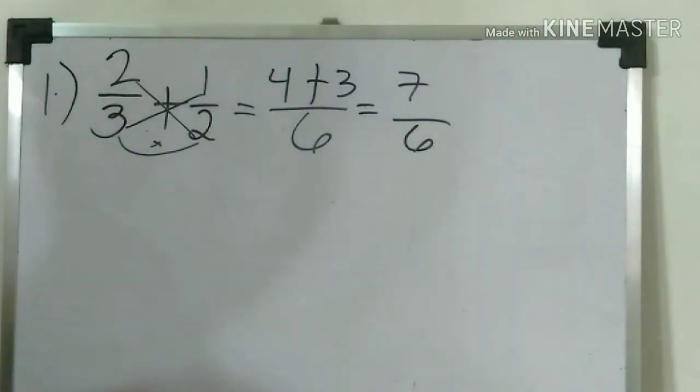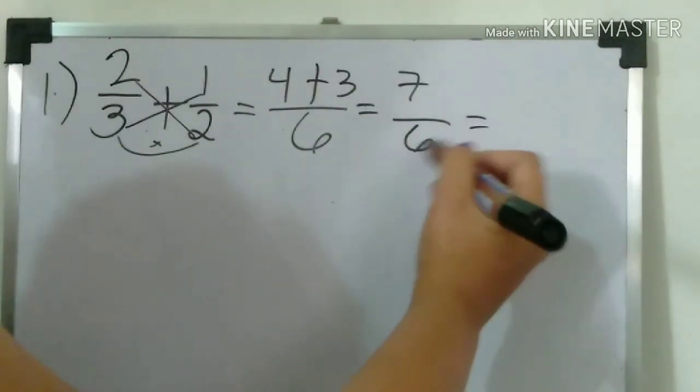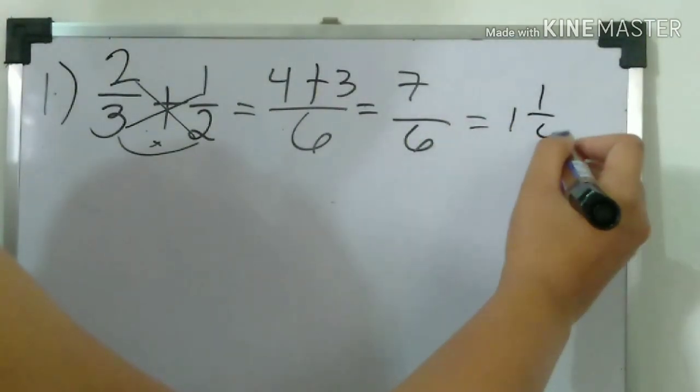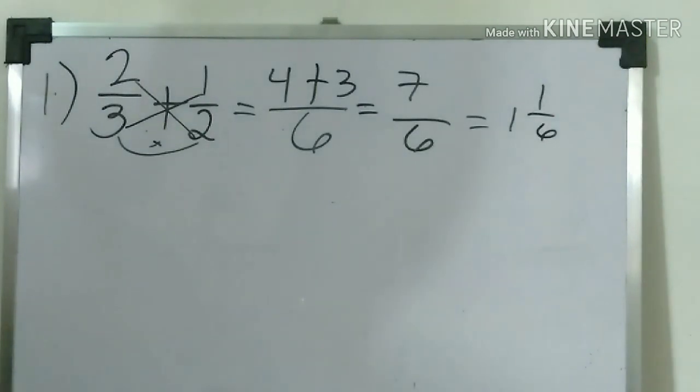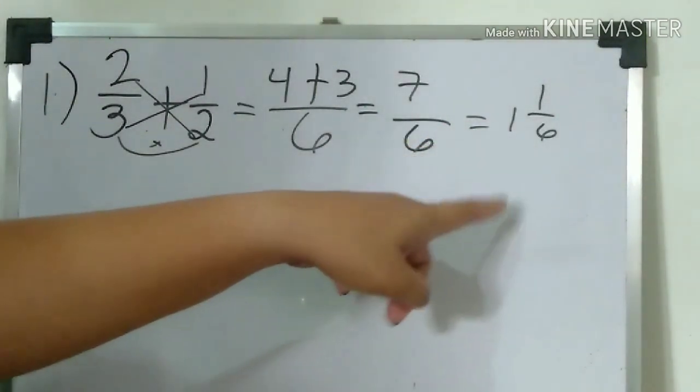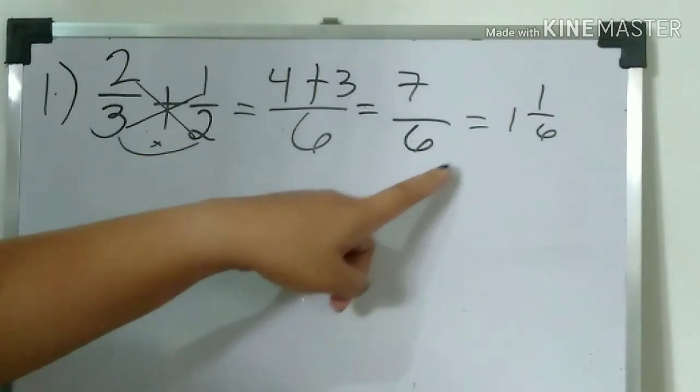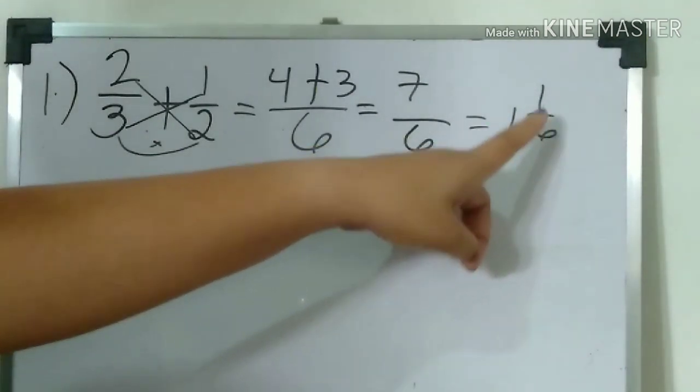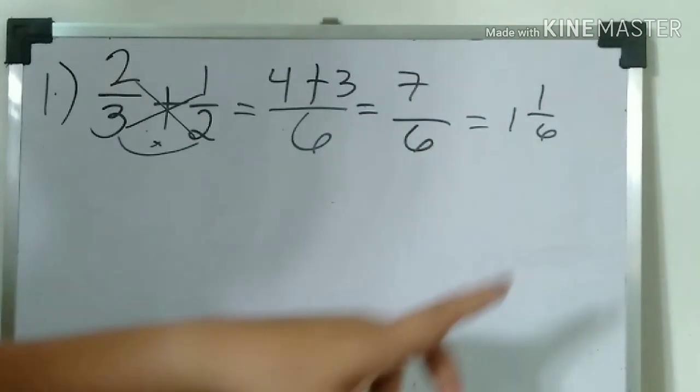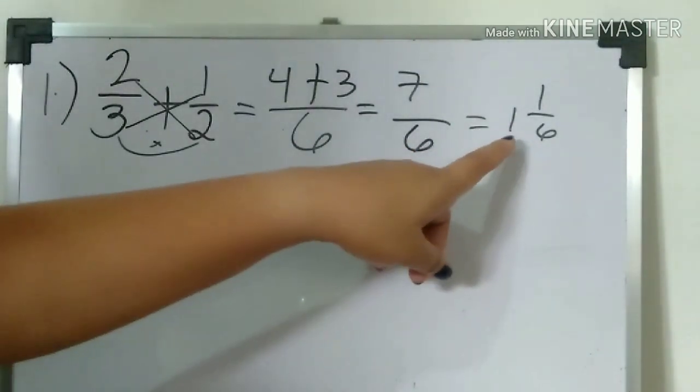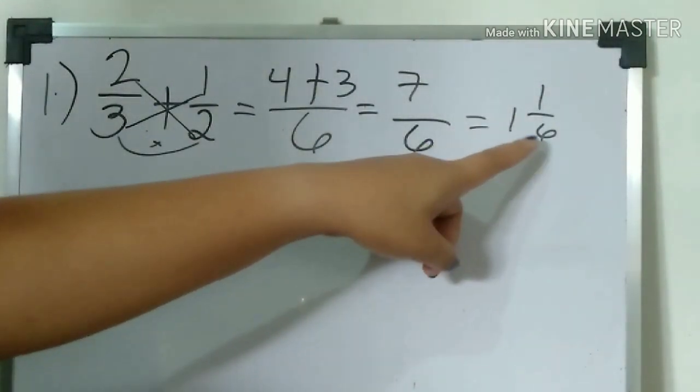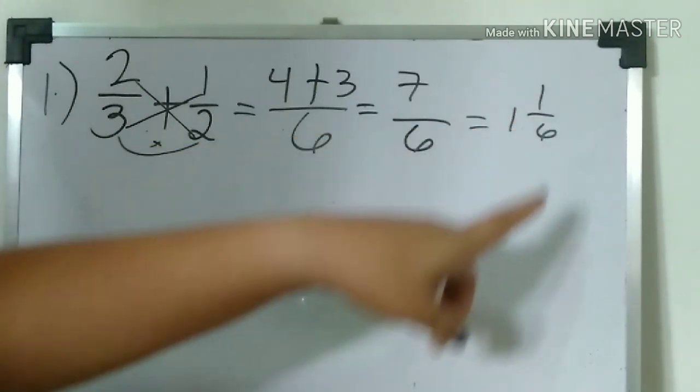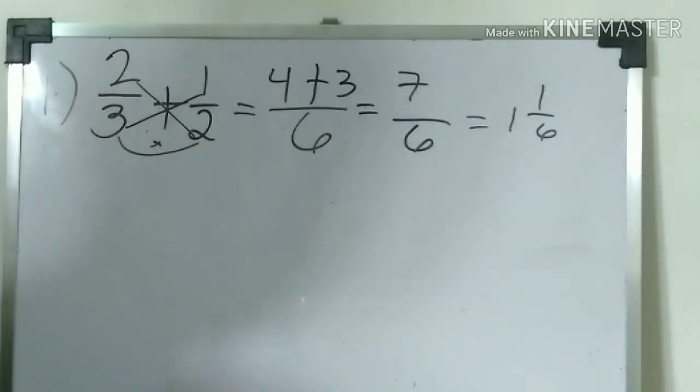So the answer is four plus three equals seven over six. Seven over six is an improper fraction, therefore change into mixed number: one and one-sixth. Because seven divided by six, the answer is one with remainder one. So the remainder goes as the numerator. Six times one equals six plus one is seven. Seven over six.